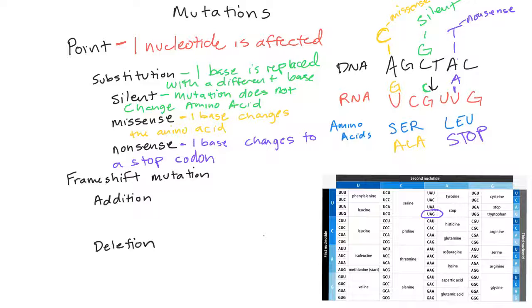A frameshift mutation changes the whole reading frame. In that you're going to either have an addition or a deletion.